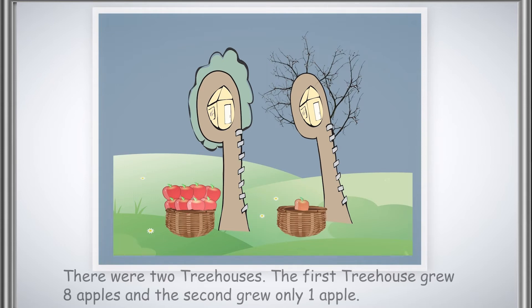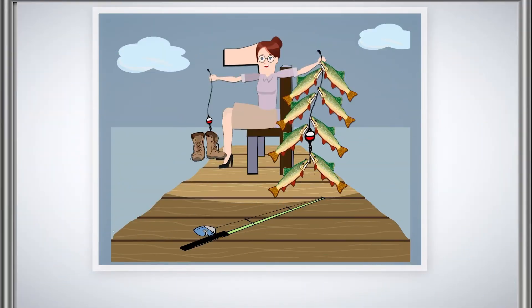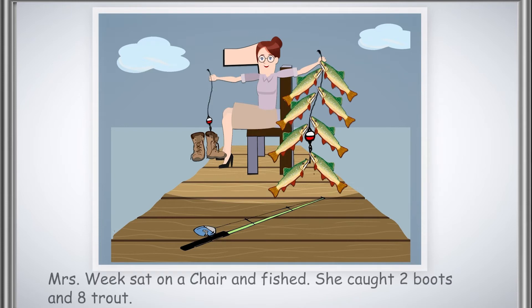There were two treehouses. The first treehouse grew eight apples and the second grew only one apple. Mrs. Week sat on a chair and fished. She got two boots and eight trout.